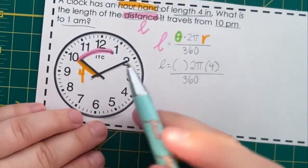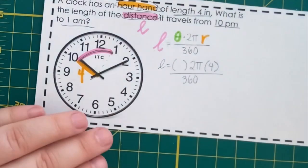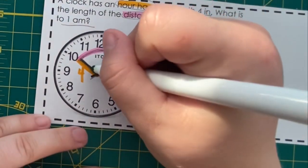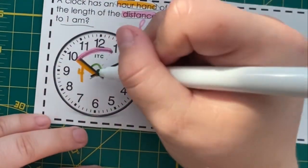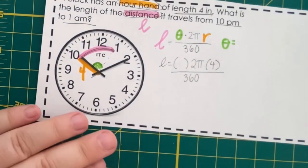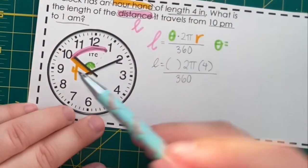And to find our angle, our theta from 10 p.m. to 1 a.m. right here, think of it as a fraction of the entire clock.